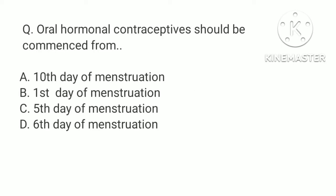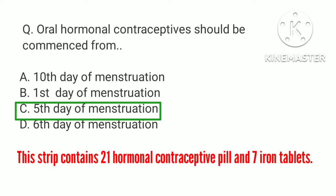Oral hormonal contraceptives should be commenced from: a. Tenth day of menstruation, b. First day of menstruation, c. Fifth day of menstruation, d. Sixth day of menstruation. The correct answer is c. Fifth day of menstruation. The course of oral hormonal contraceptives should be started on the fifth day. This strip contains 21 hormonal contraceptive pills and 7 iron tablets.